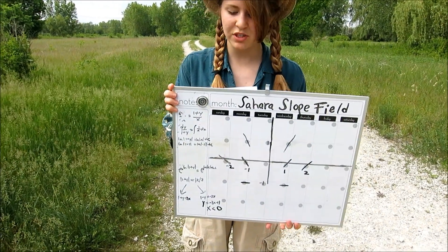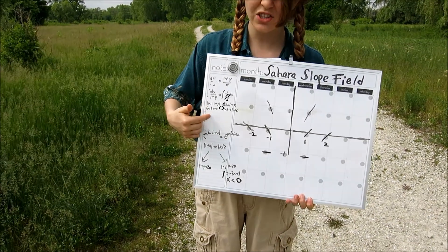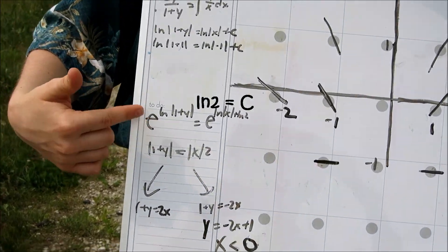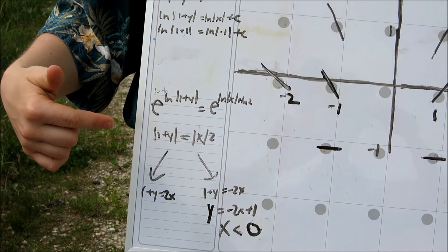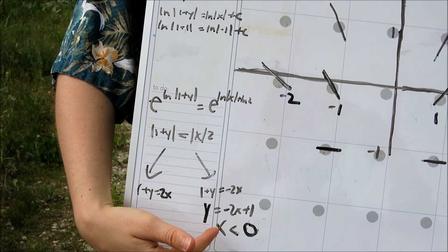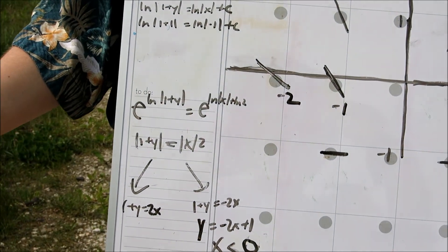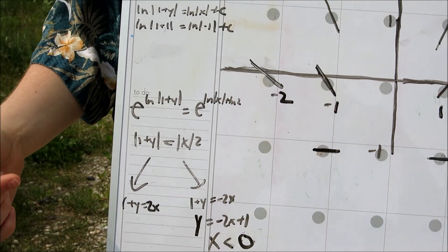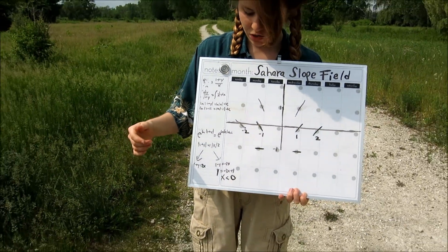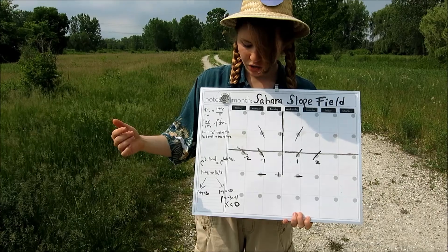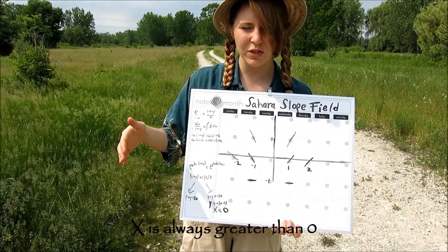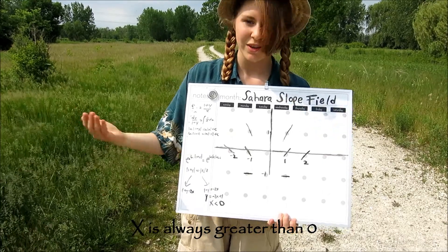Right now I've captured the constant C — it's the natural log of 2. We need to plug it back into the original equation in order to find the equation, so y equals negative 2x plus 1. With this sort of problem, we've got to state the domain in order to receive all 9 points on an AP free response. When dealing with natural logs, x always has got to be greater than 0.